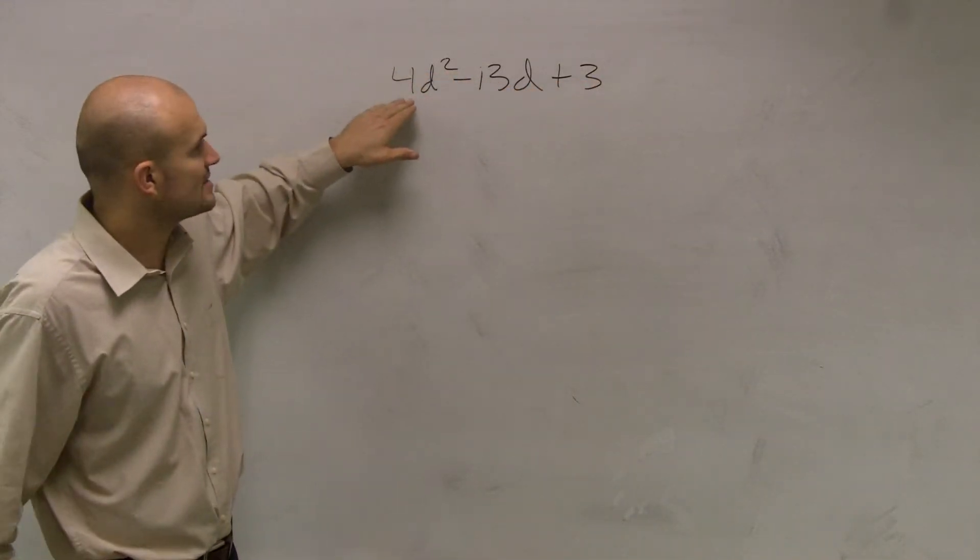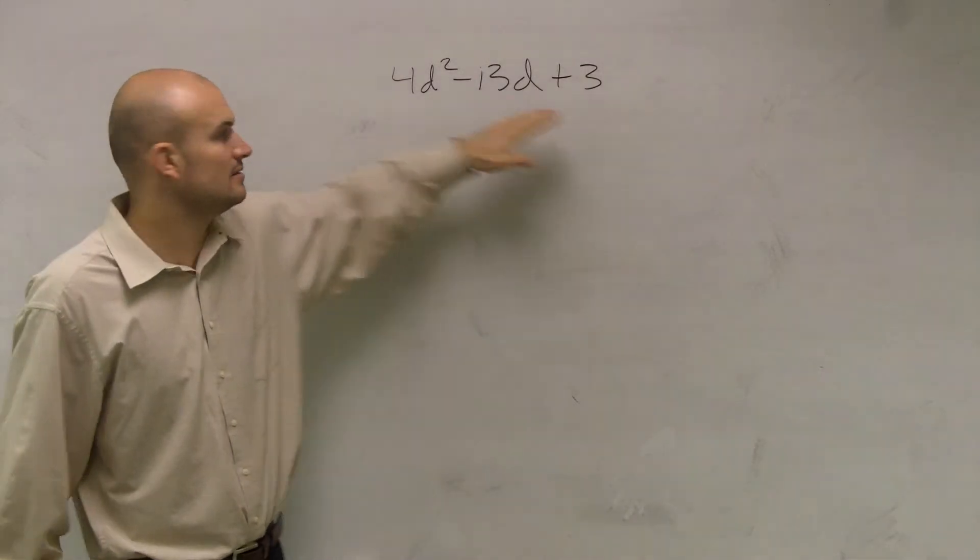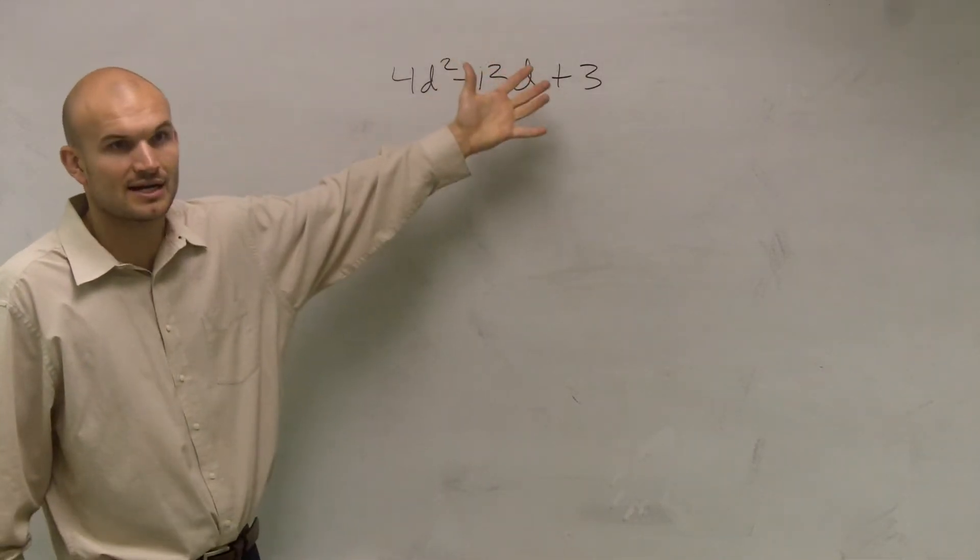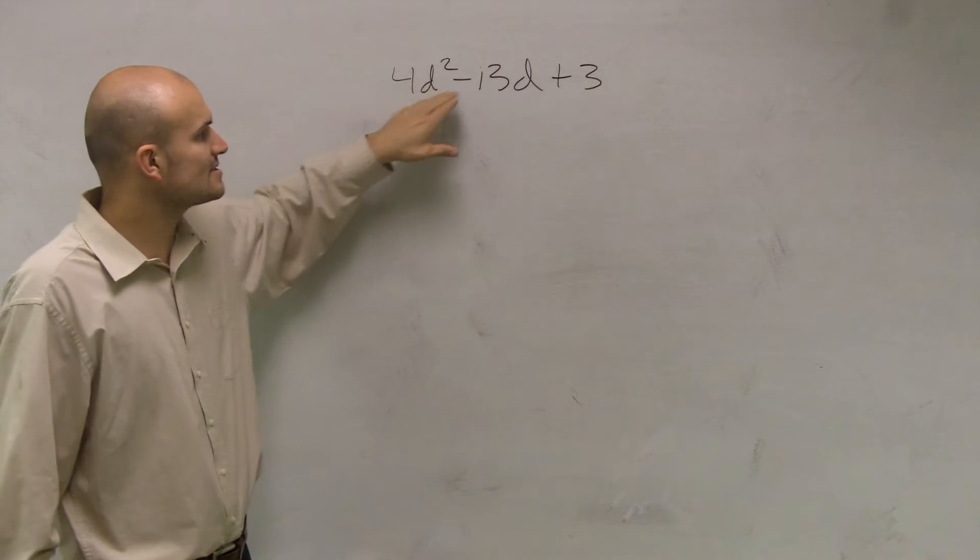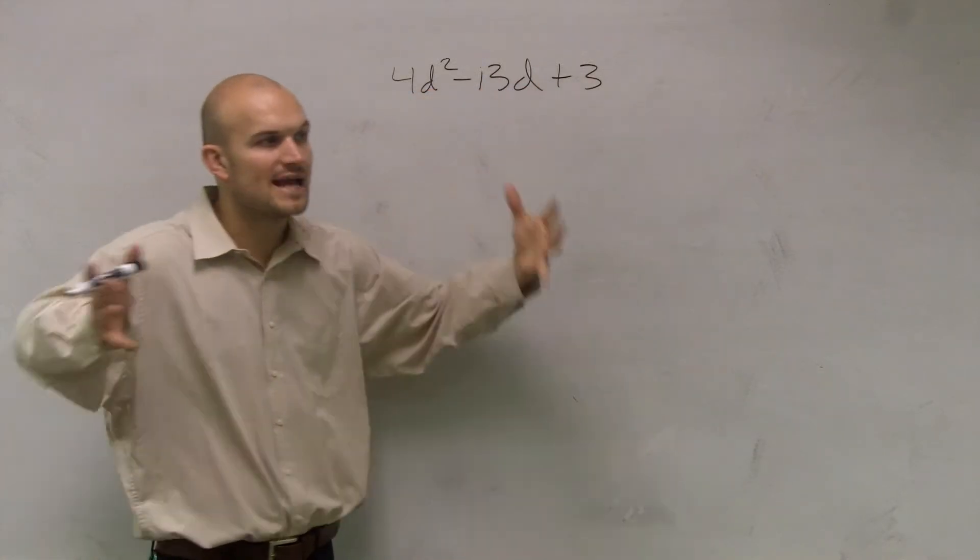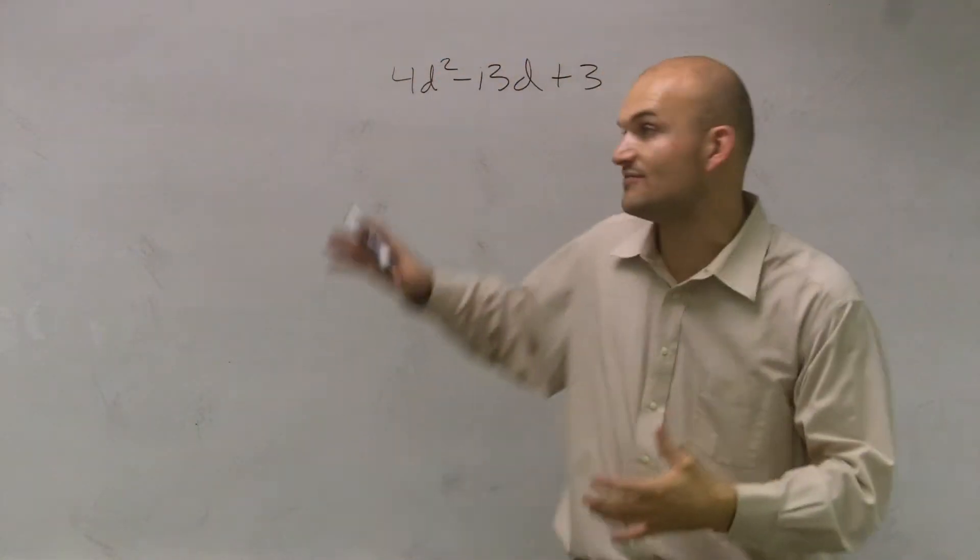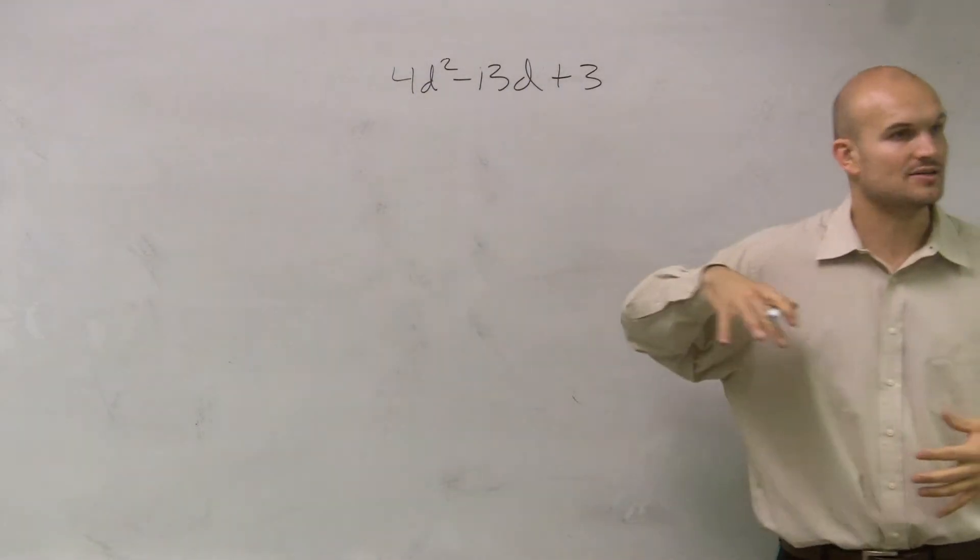And what we look at is the numbers don't have anything in common. That's a prime, that's a prime, so obviously they're not going to have anything in common. And this has a d squared, that has a d, but that has a d. So there's not one factor, one number that divides into all of them that I can factor out.